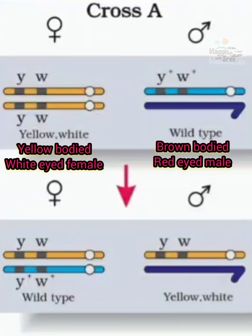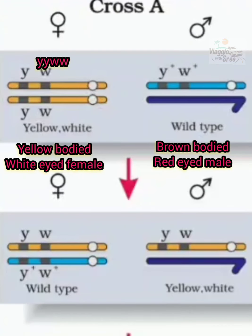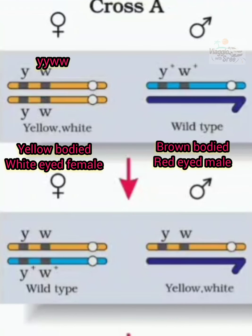Here is the yellow-bodied, white-eyed, homozygous recessive female. The genotype is small y, small y, small w, small w — homozygous recessive. In the X chromosome, Y gene and W gene have a distance. Here is the wild type, dominant, hemizygous male: Y-plus, W-plus. The dominant trait is represented by the plus sign.